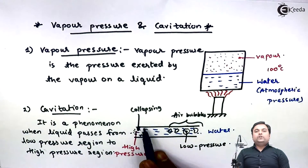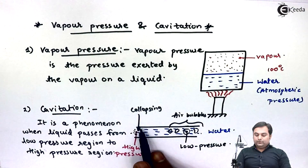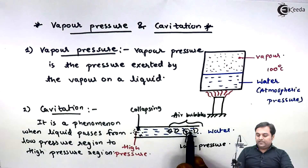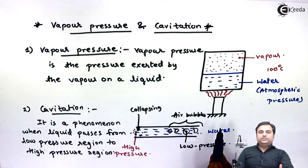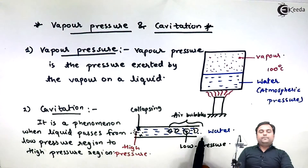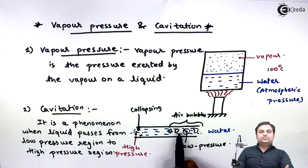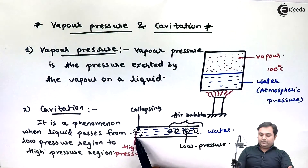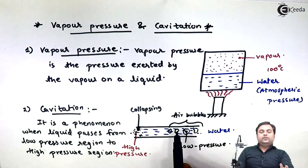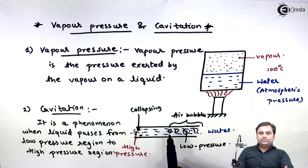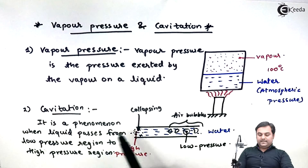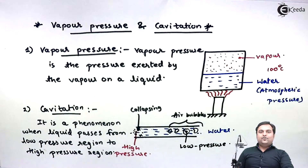Cavitation needs to be avoided — there should not be a region where air bubbles are formed. When water flows in a pipeline, we try to avoid air bubble formation, because when those bubbles collapse suddenly there is a tremendous rise in pressure and the walls of the pipeline get pitted, looking like corrosion. So this was the cavitation phenomena. In this video we have seen vapor pressure and cavitation with the help of diagrams.